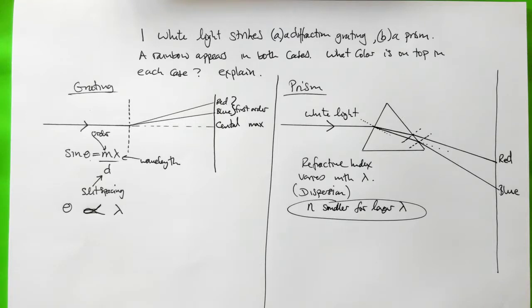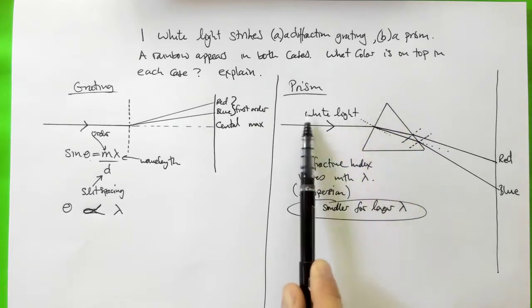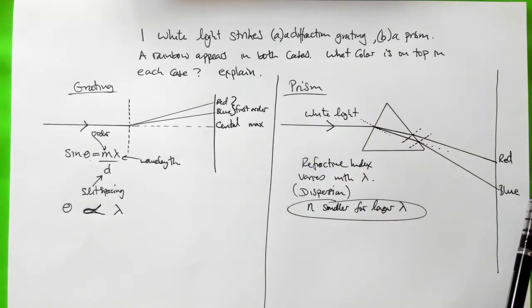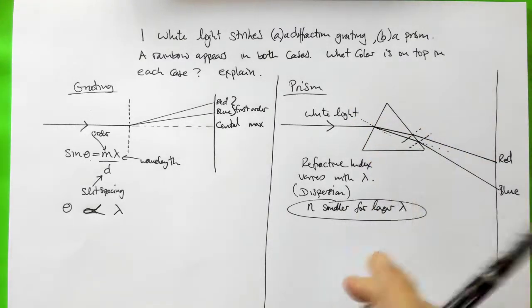So there we have it. So in this particular case with the grating and the prism, with this particular orientation of the prism, this is the rainbow we'd get. So in these two cases we would get the rainbows on top in both cases.